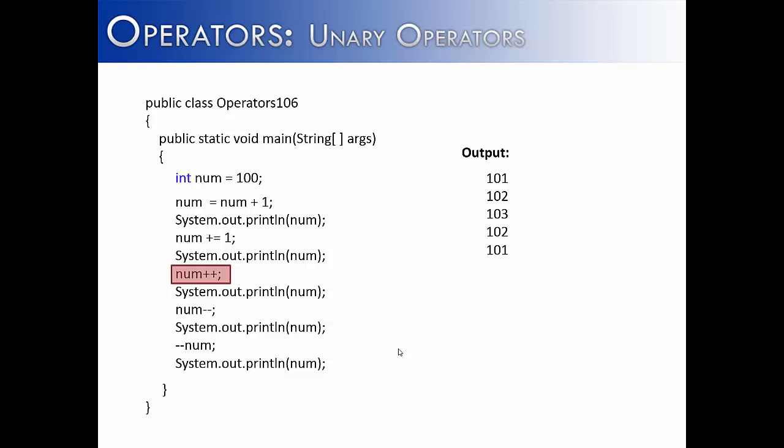And so sometimes, especially beginning programmers, can forget that num is permanently being increased by one, even though no assignment operator is present. So when we print out the value, we would get 103.